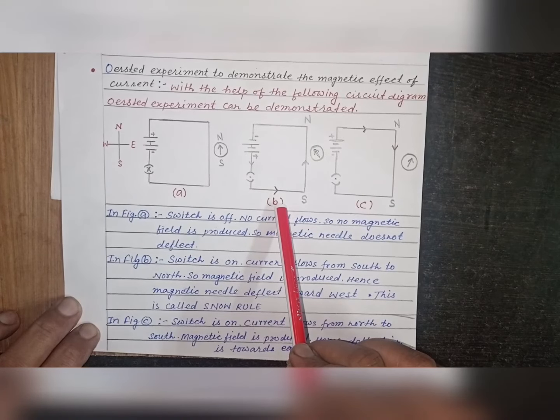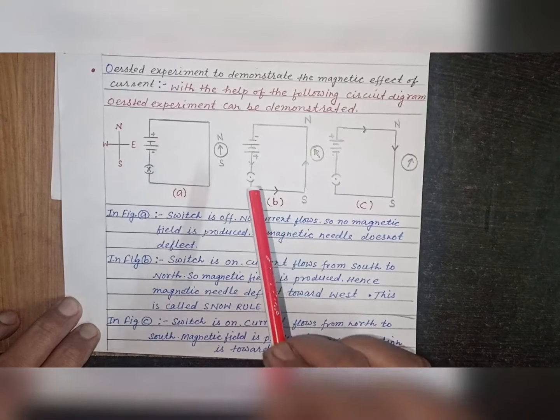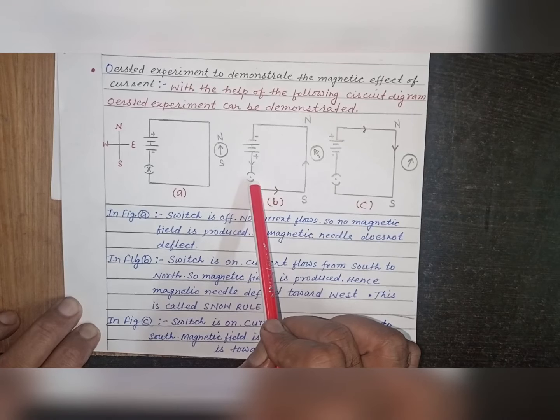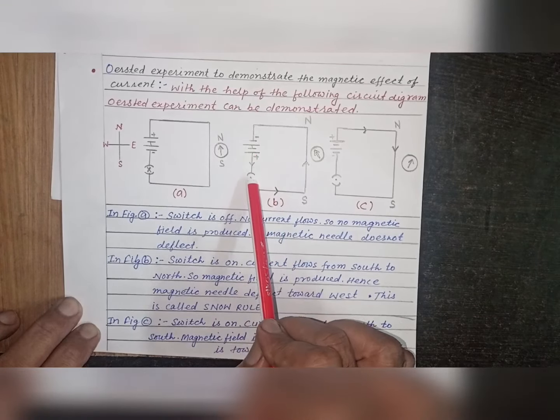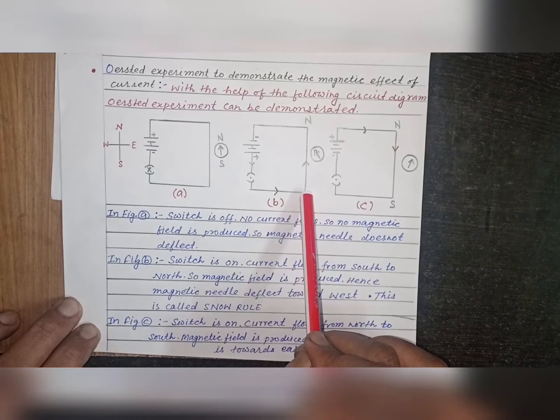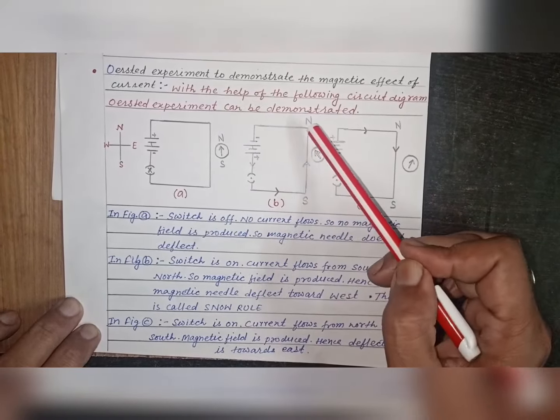In figure B, switch is ON. Current flows in the circuit, as shown in the figure, from south to north.